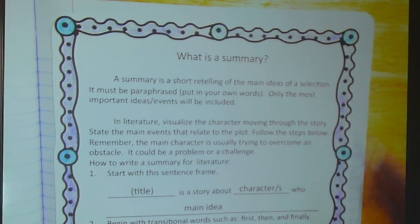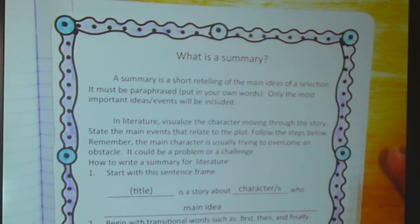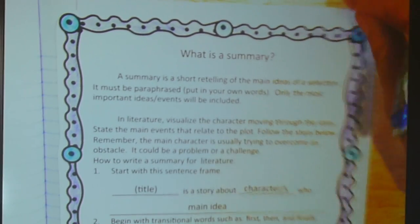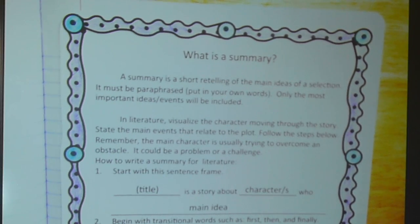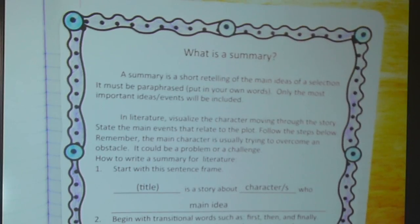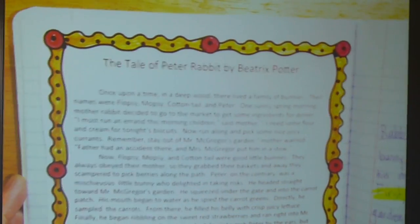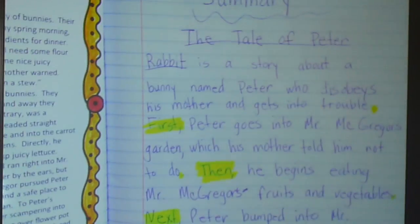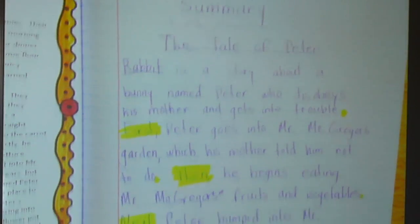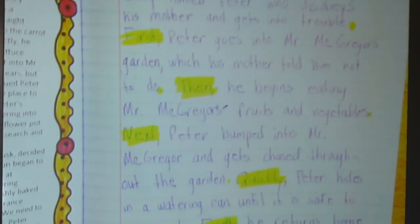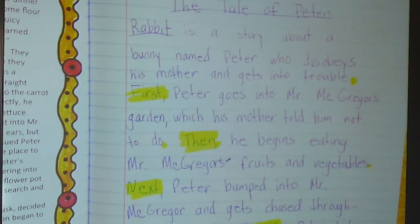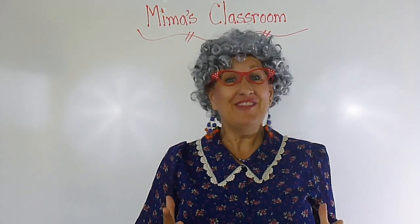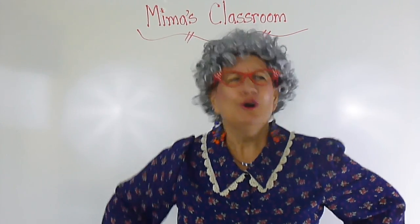Now boys and girls, you can color the borders of your summary page and trim it and put it in your interactive notebook as a guide for future summaries. I always like to also glue in one example so I can go back and review it when I write my next summary. You can color your borders, trim the story, glue in your Tale of Peter Rabbit story, and on the opposite page you have your summary. Notice that I've highlighted my transitional words just to remind myself to use those. Boys and girls, I hope you enjoyed today's lesson on summary writing. Don't forget to join me again for another lesson in Meemaw's classroom! Who said that?